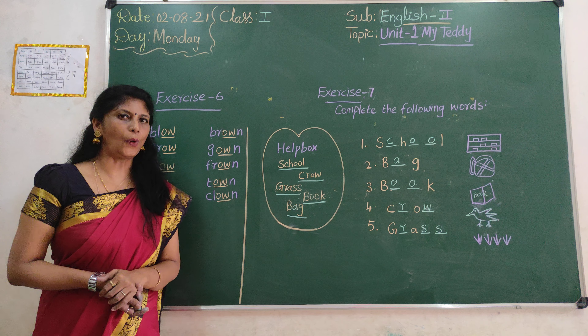Okay, children: blow, grow, flow, toe, slow, brow, gown, frown, toe, claw. These words — we have to practice that form. Next, complete the following words: S-C-H-O-O-L, school. B-A-G, bag. B-O-O-K, book. C-R-O-W, crow. G-R-A-S-S, grass. School, bag, book, crow, grass.